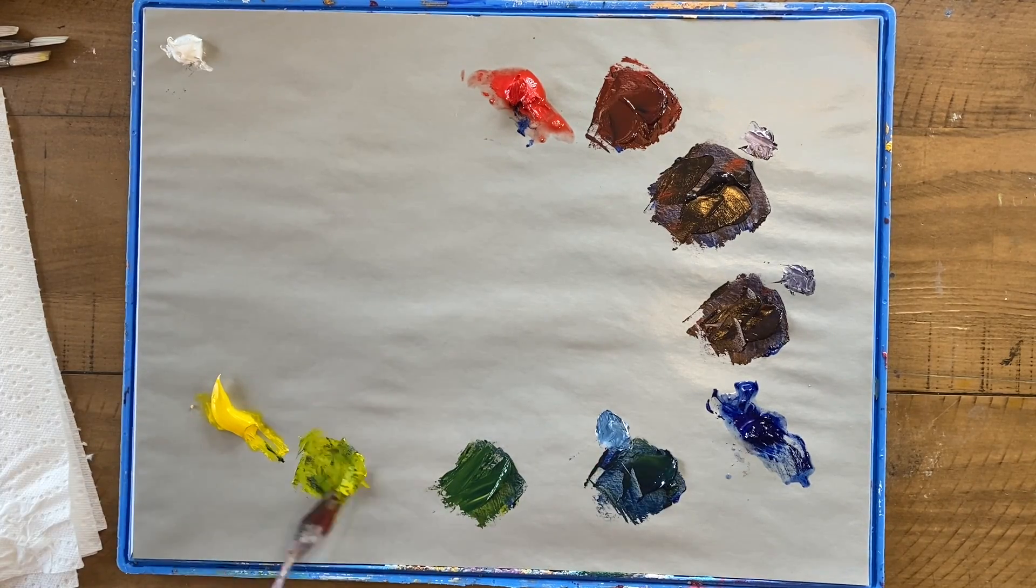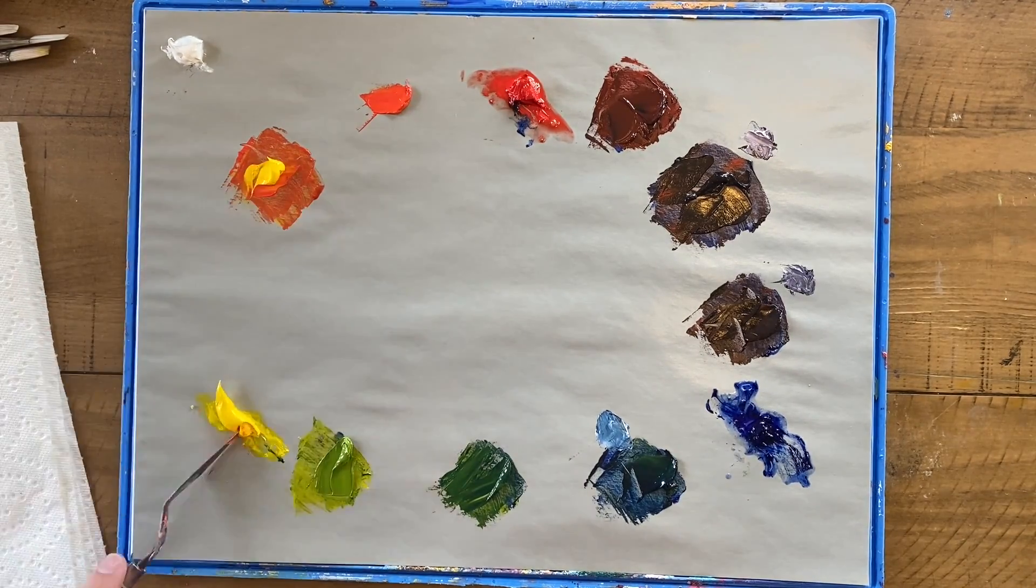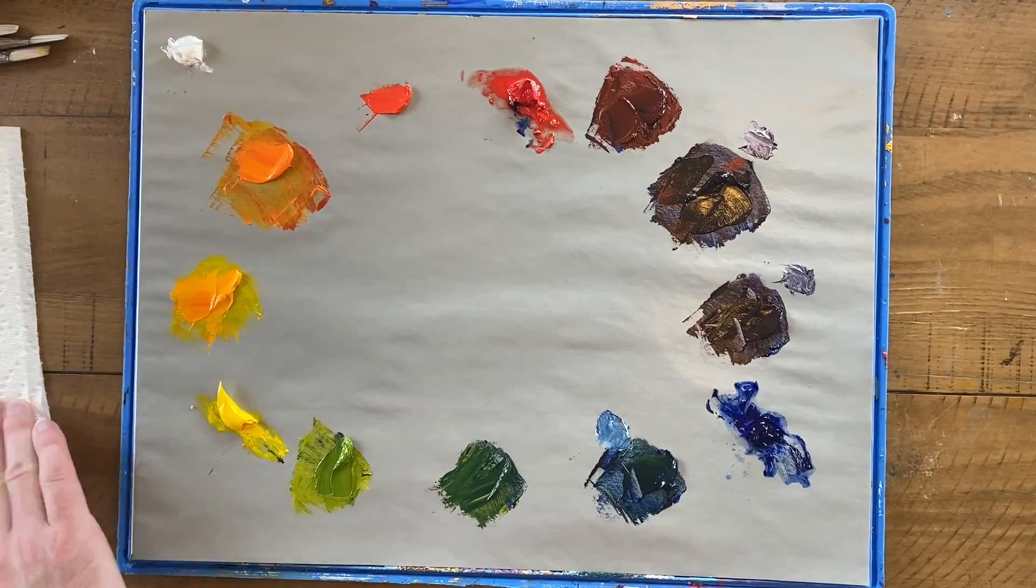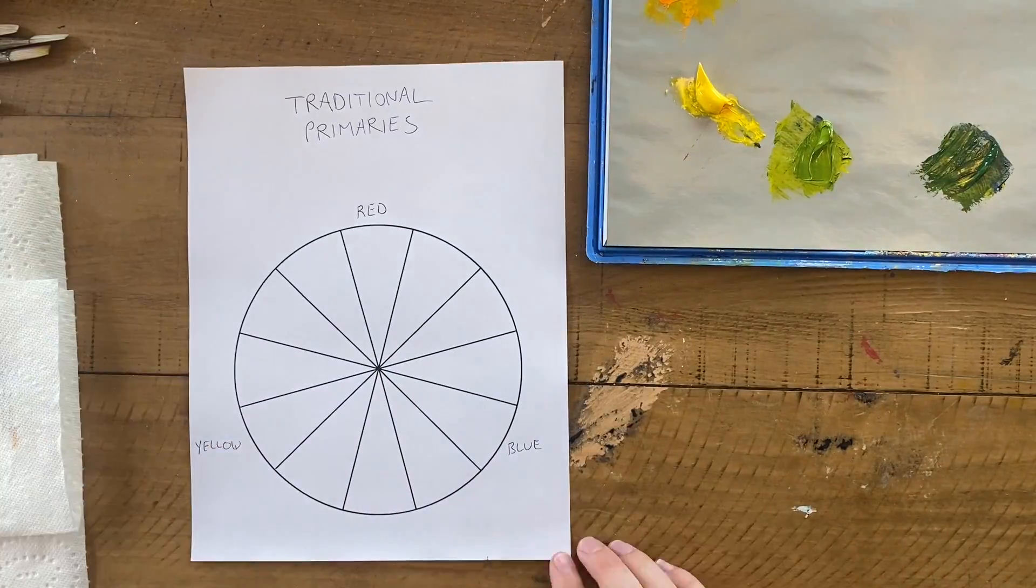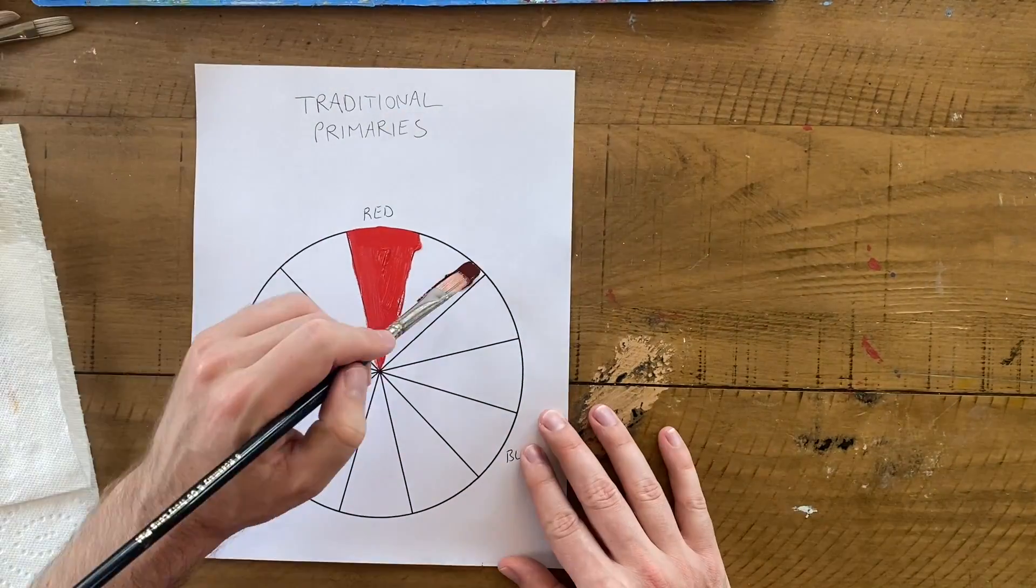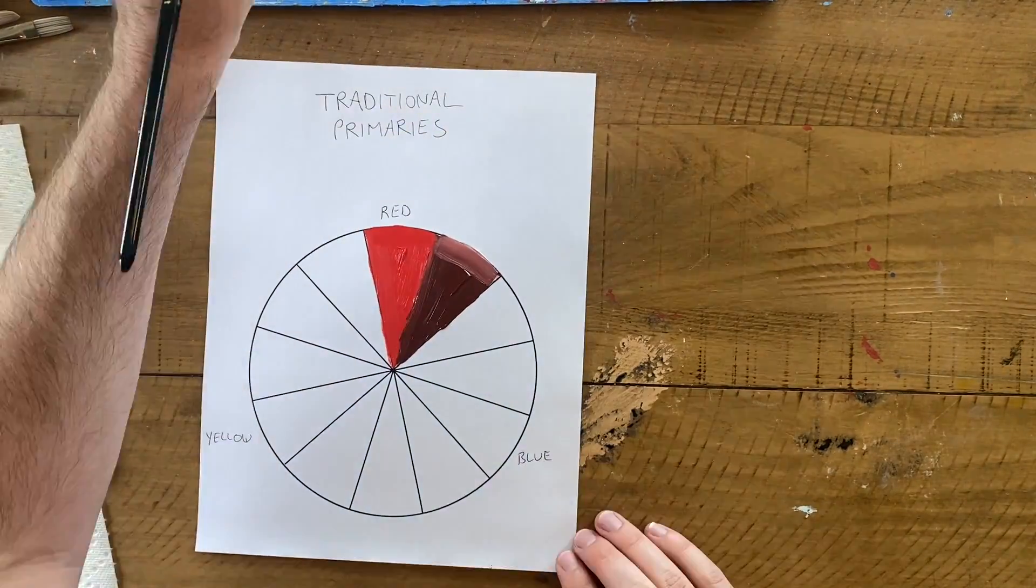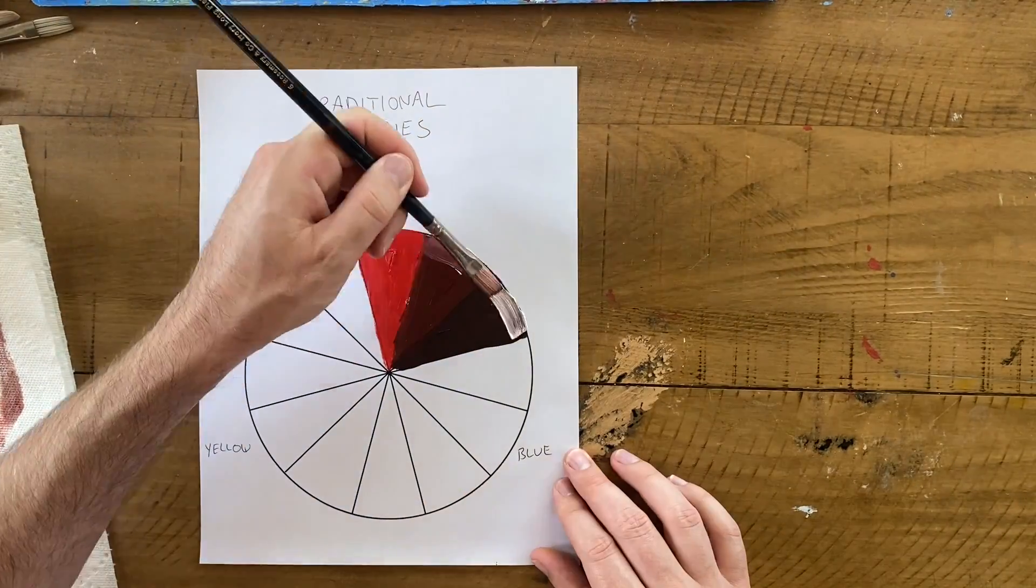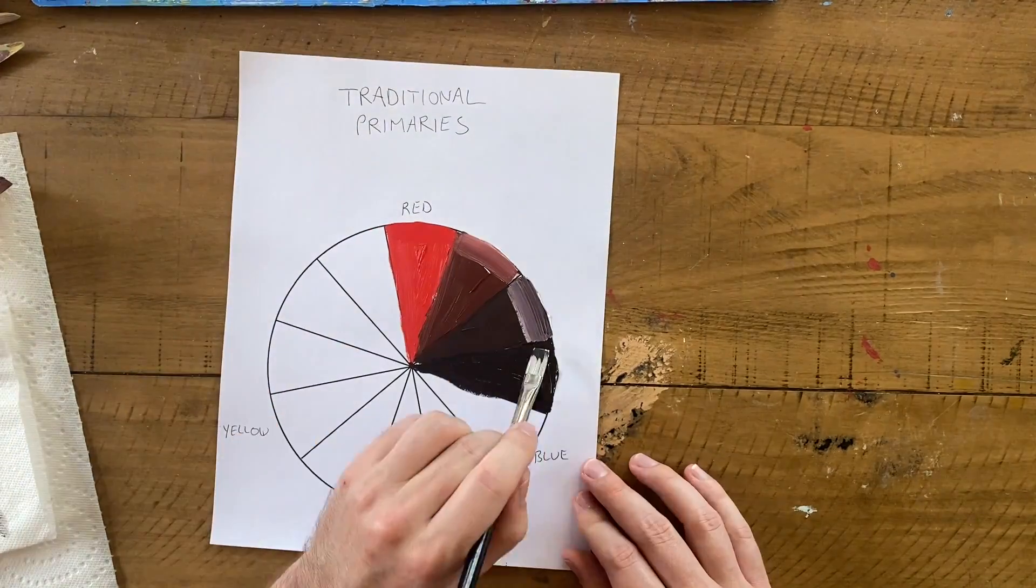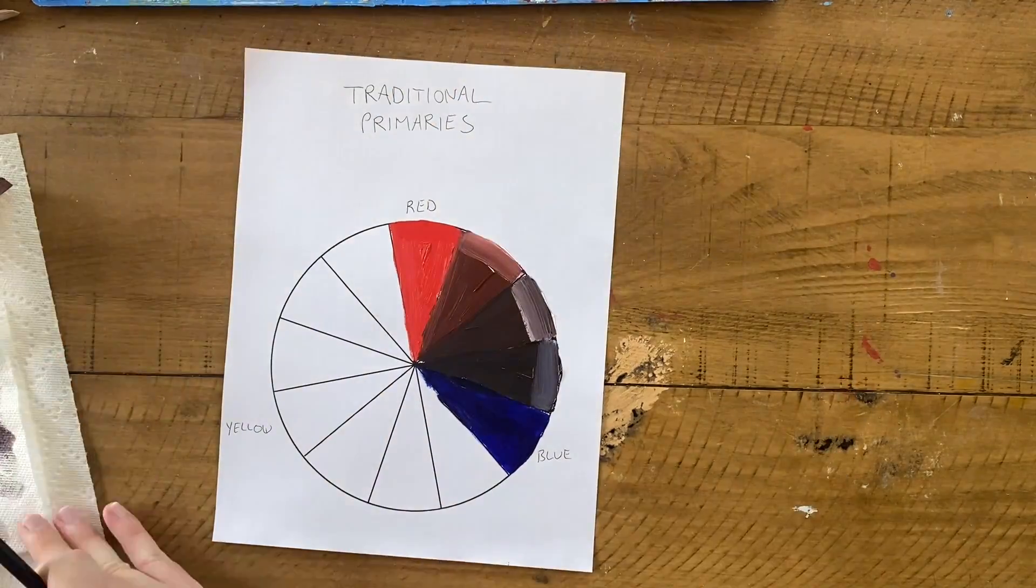One of the things that you'll already notice as I'm making this color wheel is while I can get very vibrant reds and oranges, I actually get a pretty dull looking purple. This shows us something about color mixing in general. Color mixing is subtractive. What that means is you lose saturation when you mix two colors together. Using our purple color as an example, I'll never be able to mix a purple that is as saturated as a purple that I get straight from the tube.